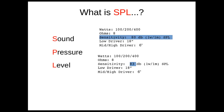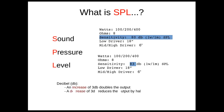That 83dB speaker is 3dB louder than the 80dB one. So which cabinet is going to be louder? Here's how decibels work: an increase of 3dB doubles the output, and a decrease of 3dB reduces the output by half.